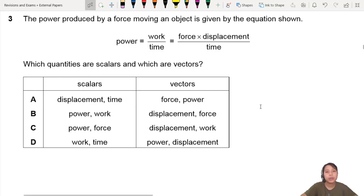Still in chapter 1, this is a question from Units, kind of knowing which is scalar, which is vector. Power produced by a force moving an object is given by this equation shown. Power equals work over time, force times displacement over time. Which quantities are scalars and which are vectors?